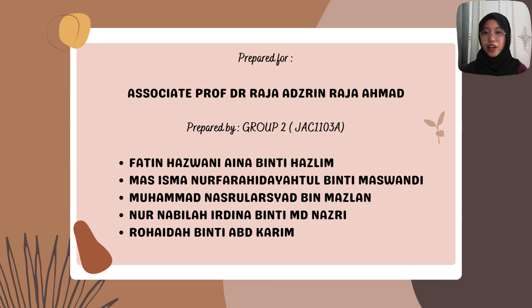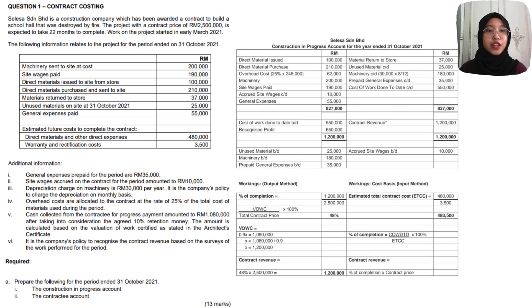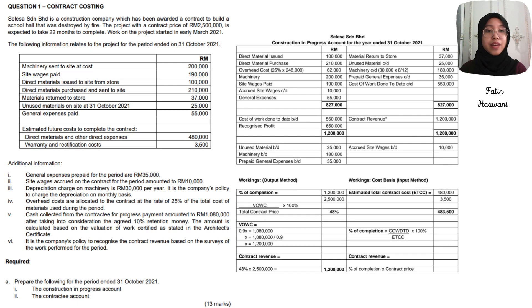Assalamualaikum. We are Group 2 from GEC 1103A. We will explain about the construction in progress account and how to calculate it. Due to the length of time to complete a contract, it is important to determine revenue to be recognized for each accounting period. We also need to count the expenses incurred based on our accounting period, so it is important to know the date and how long is the term of one accounting period.